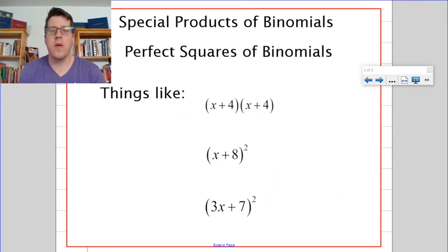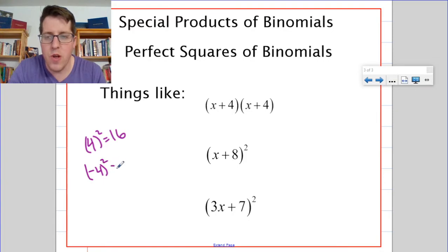The last thing we want to look at is what are called perfect squares of binomials. So for example, what happens if I multiply something by itself? You know, in general, if I multiply 4 by itself, I would get 16, and if I multiply negative 4 by itself, I would also get 16. So that's how it works with numbers. But how does it work for binomials? Let's see if we can find a pattern. Let's FOIL.